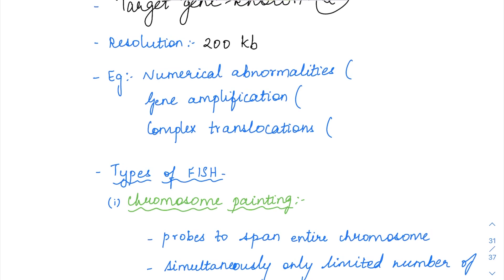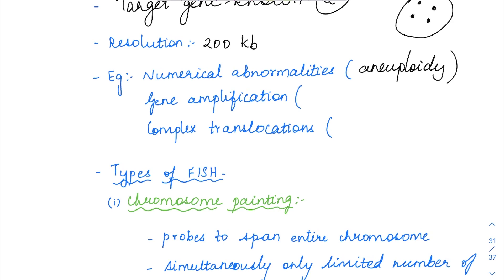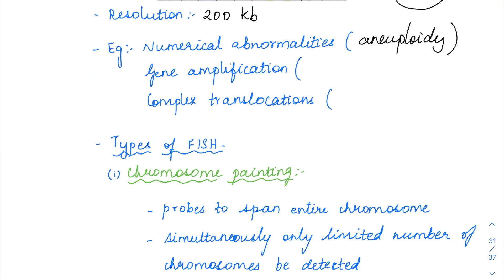FISH can be used to detect numerical abnormalities like aneuploidy — increases or decreases. For trisomy, you will get three fluorescent marks rather than the usual two copies. So normally two red dyes and two green dyes will be present. But in trisomy you are going to have three copies of a single chromosome, so one color will be three in number. So aneuploidy can be detected with FISH.